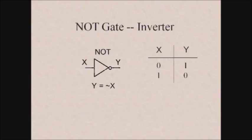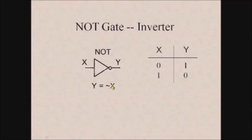The first basic gate is the NOT gate, also called an inverter. Here you can see the symbol for representation of a NOT gate. The NOT gate accepts only one input and provides only one output. The input is x and the output is y, and the output expression is y equals complement of x, or x bar. The truth table shows: if x is 0 then the output becomes 1; if x is 1 then the output becomes 0.